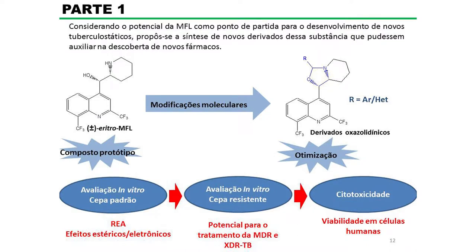Então, durante a minha tese, o objetivo foi tentar otimizar, melhorar a atividade dessa molécula, promovendo modificações na sua estrutura. A gente propôs a introdução de um núcleo oxazolidínico na mefloquina para tentar avaliar se isso poderia trazer melhoras na atividade. O esquema proposto foi: primeiro, as substâncias seriam sintetizadas; depois, avaliadas in vitro considerando efeitos estéricos e eletrônicos; em seguida, avaliadas in vitro contra uma cepa resistente do Mycobacterium tuberculosis; e, por fim, verificada a citotoxicidade, já que não adiantaria inibir a bactéria mas ser tóxica para células humanas também.